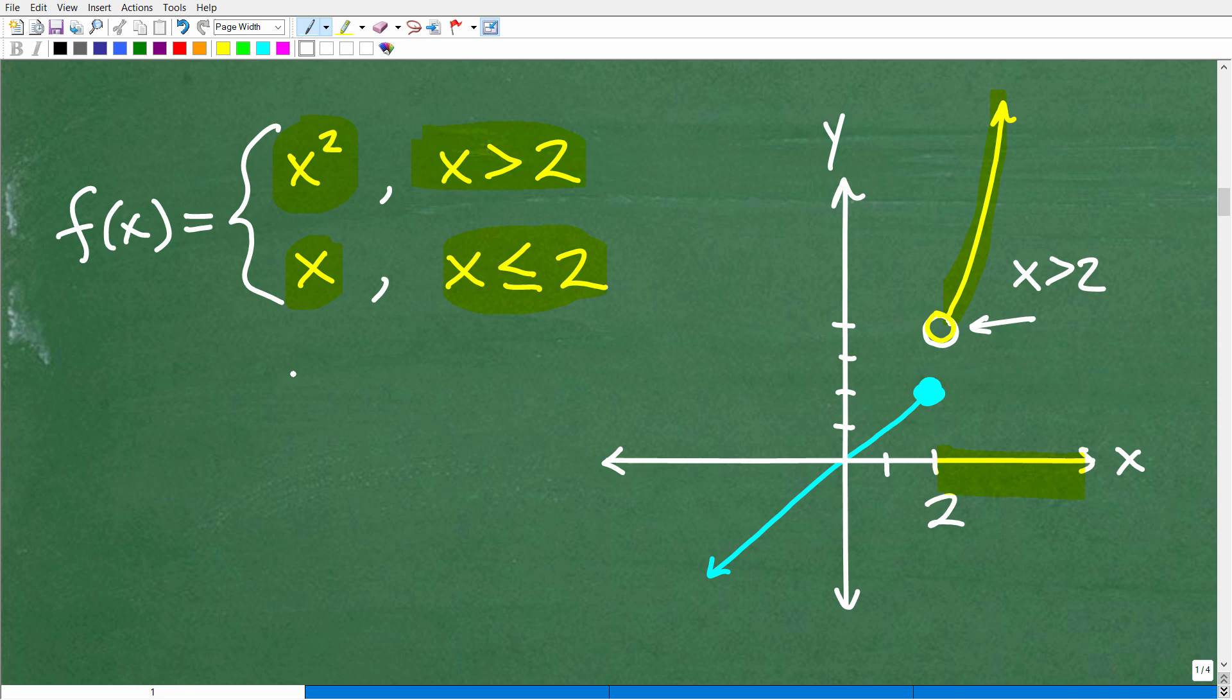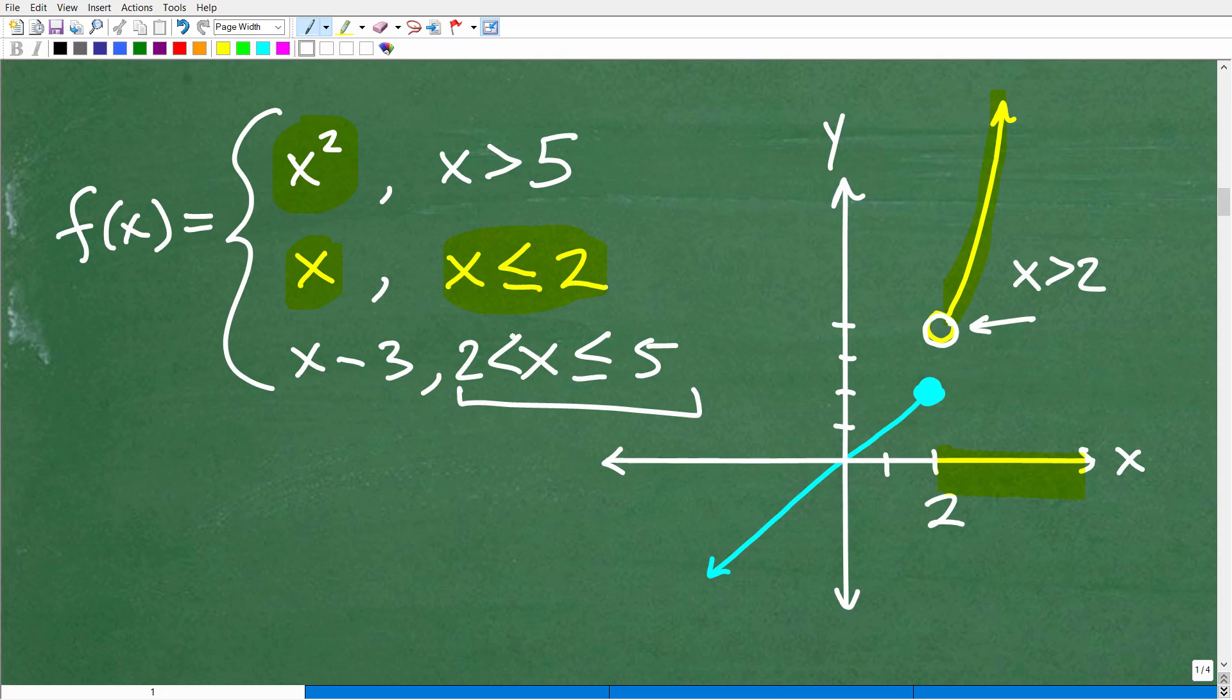All right, so there's a lot of different type of piecewise functions. You can actually make them more interesting. We can plug in other values. Let's say, let's kind of fix this up here, let's say we'll have the parabola x squared when x is greater than 5, then when we have x is greater than 2, then maybe we can have another function here. Let's say x minus 3 when x is, well, it would have to be less than 5, maybe less than or equal to 5, less than or equal to 5, and greater than 2, for example, some other interval. But anyways, I'm just kind of throwing this out there that you could have more than just two functions in your piecewise function.